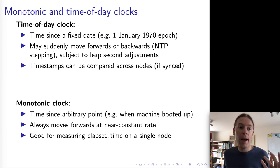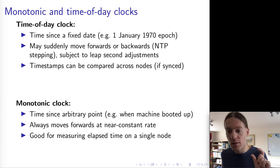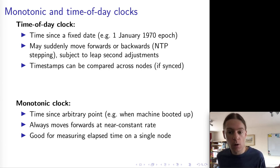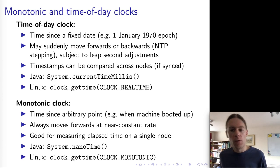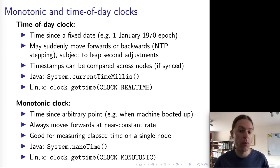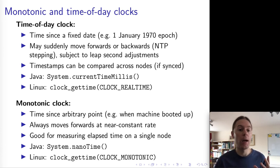If you calculate the difference between two time-of-day timestamps you are affected by NTP jumping and also potentially by leap seconds, making them bad for measuring elapsed time. On the other hand, time-of-day timestamps can be compared across different computers — for example, checking whether a TLS certificate is still valid requires the accurate current date to compare against the certificate's timestamp. Many programming languages and operating systems provide APIs for both: in Linux, the clock_gettime call takes an argument specifying whether you want the real-time clock or the monotonic clock. It's important to keep this distinction in mind — it's not just about resolution, but about choosing the right type of clock.